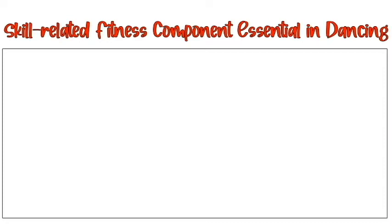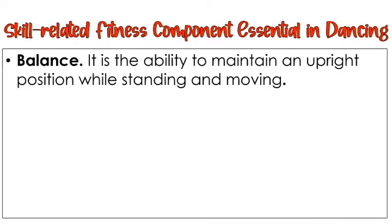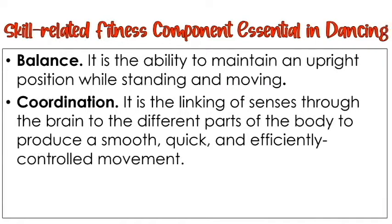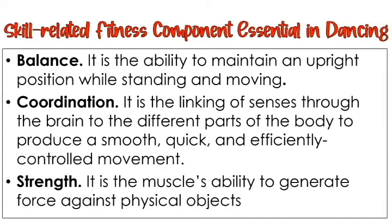As a review of the skill-related fitness components essential in dancing: Number one, balance — the ability to maintain and operate position while standing or moving; it is the equilibrium of one's body. Number two, coordination — linking of senses to produce smooth, quick, and efficient controlled movement. Strength — the muscles' ability to generate force against physical objects. These are the skill-related fitness components considered essential in dancing.